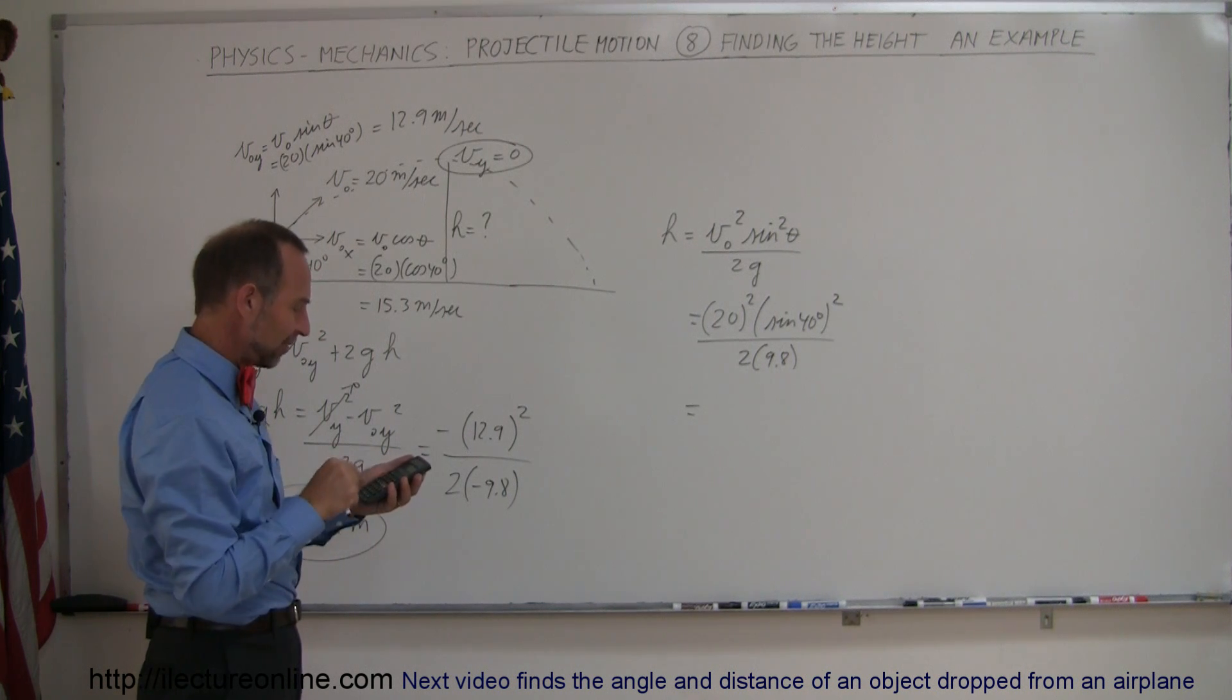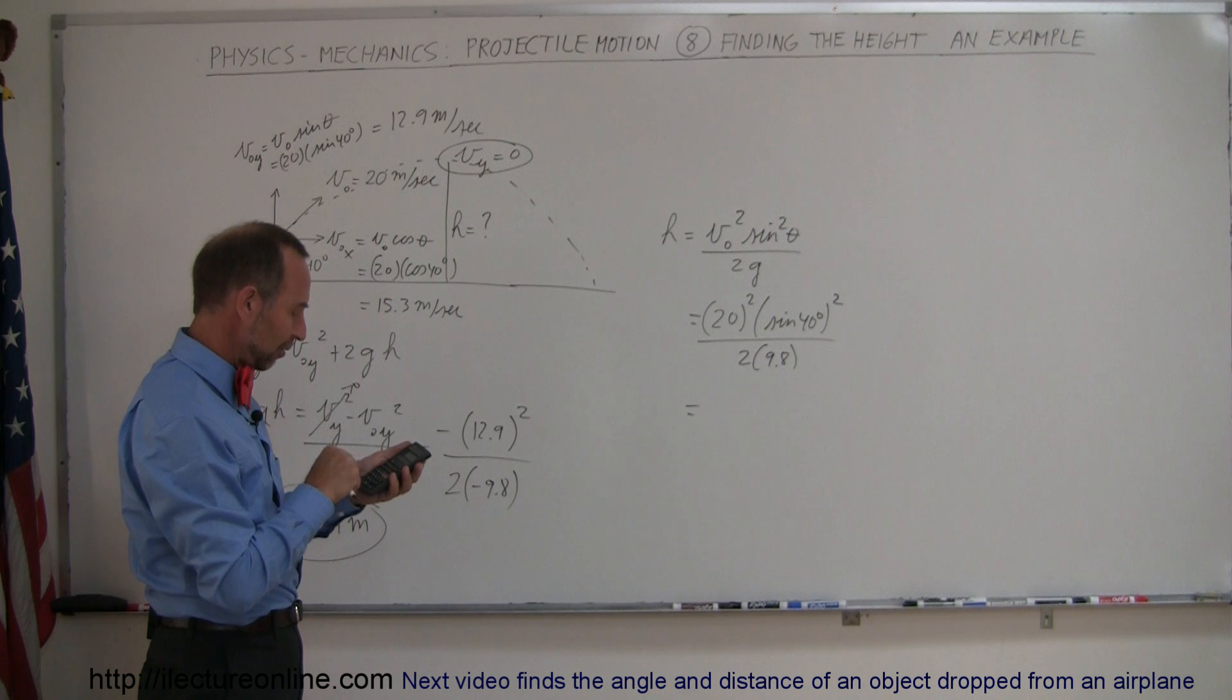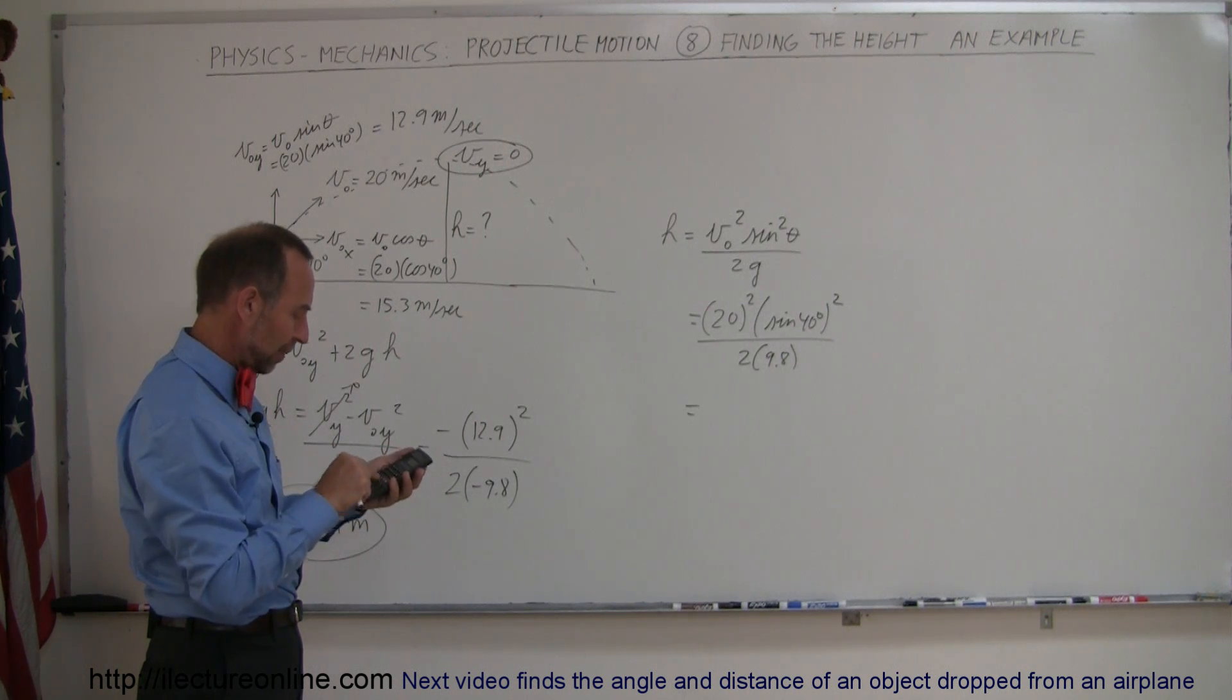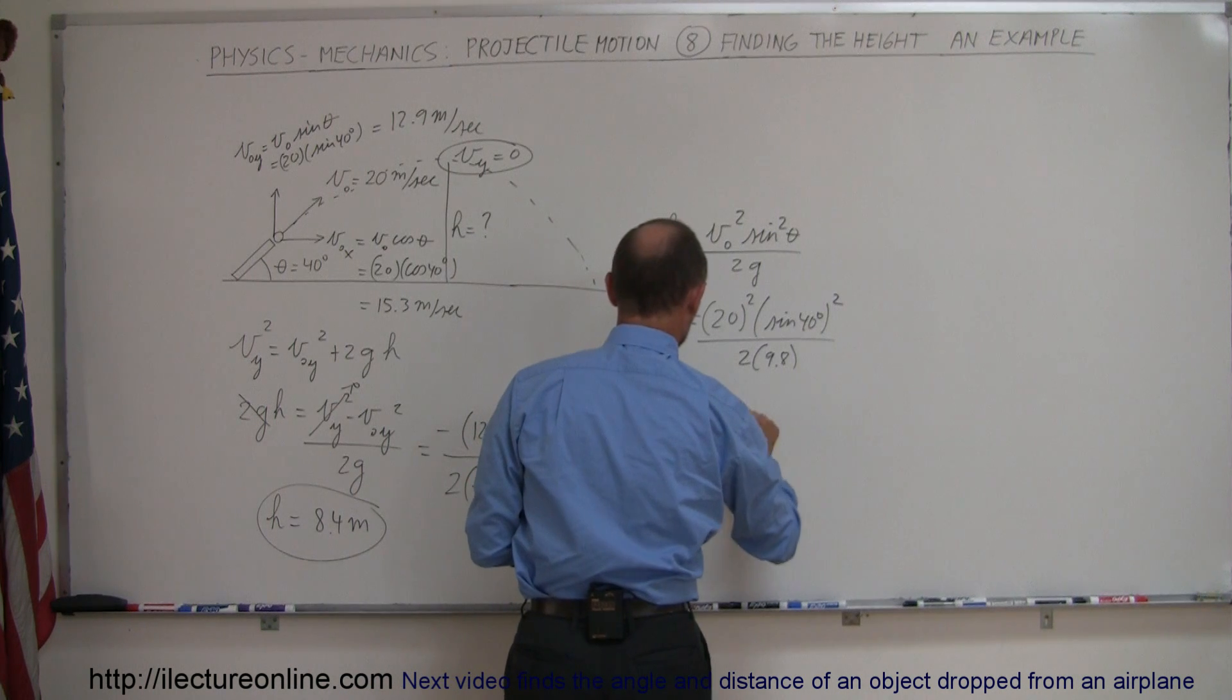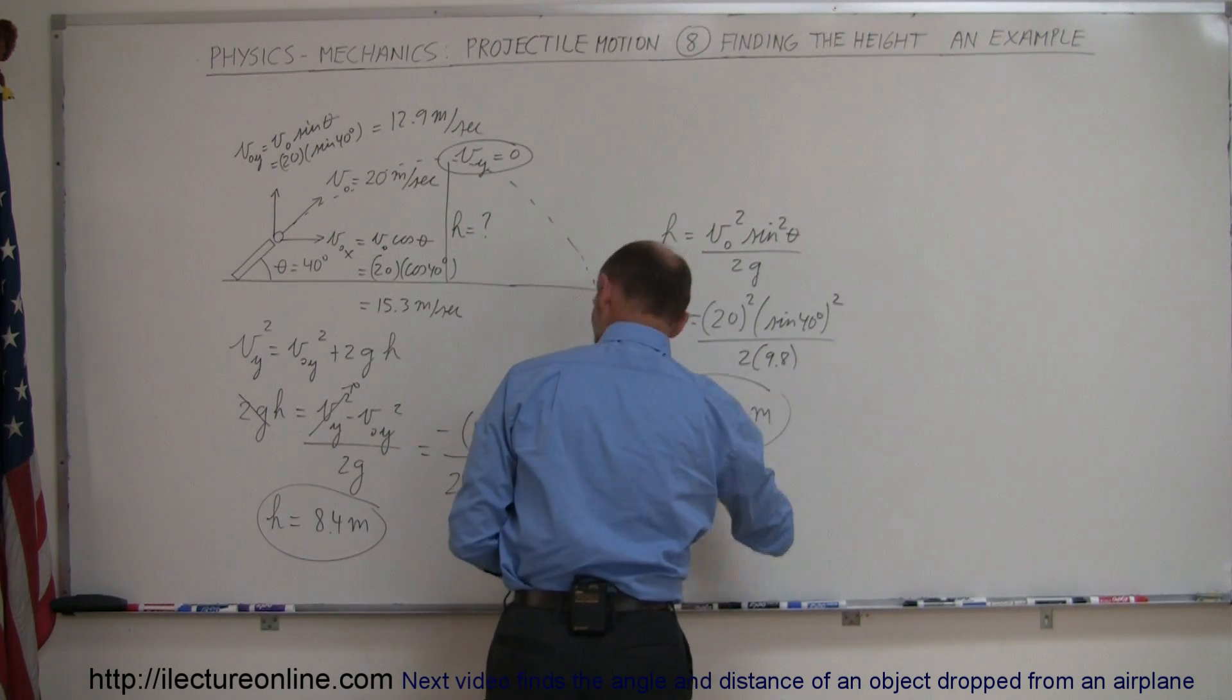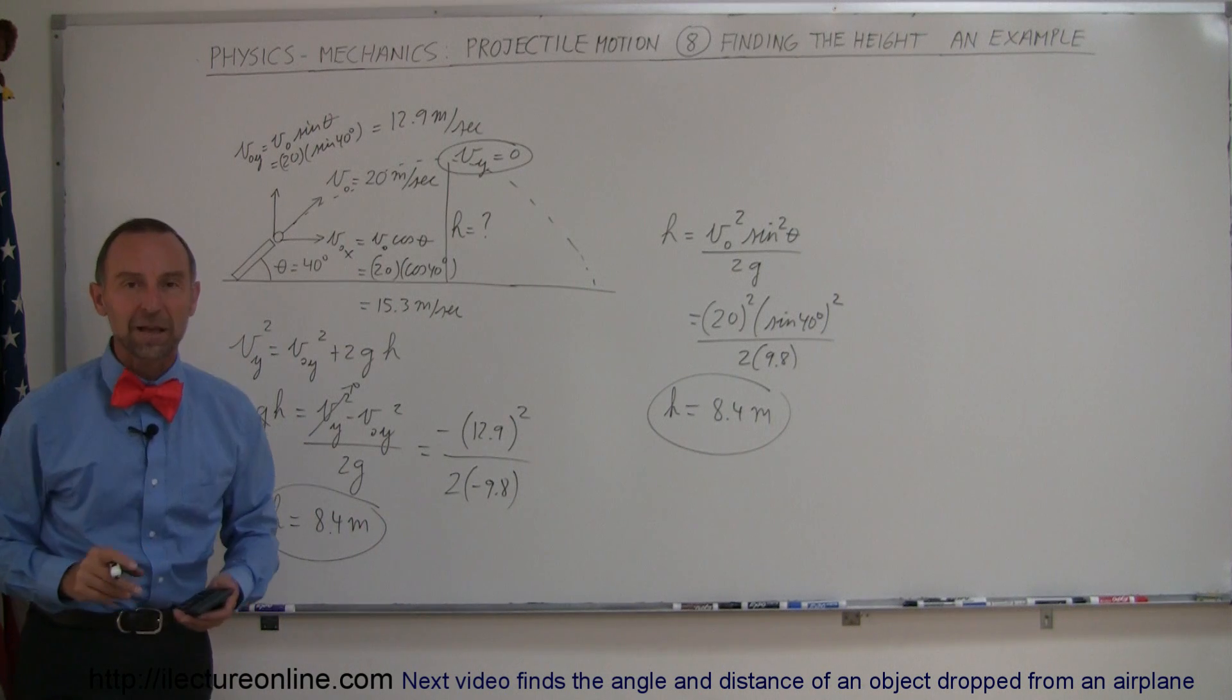So we take the sine of that, we square that number, we multiply that times 400 divided by 2 divided by 9.8 equals and I get 8.4. And yes indeed the exact same answer.